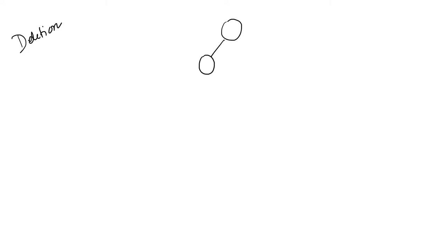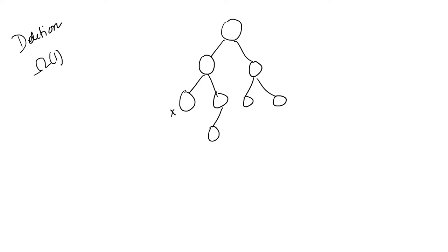For the deletion operation, deletion happens in three different cases. If we are deleting a leaf node with no children, deletion can be performed in constant time. But if we are deleting the root node which has two children, we must find the successor, which requires O(log n) time. Hence the deletion operation also takes O(log n) time. So for a balanced tree, deletion can be done in O(log n) time.